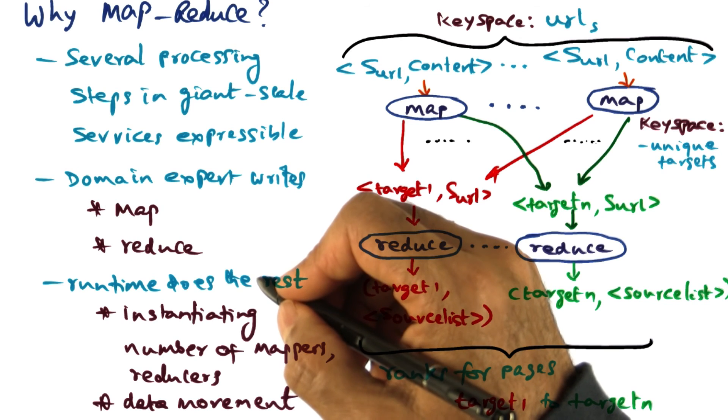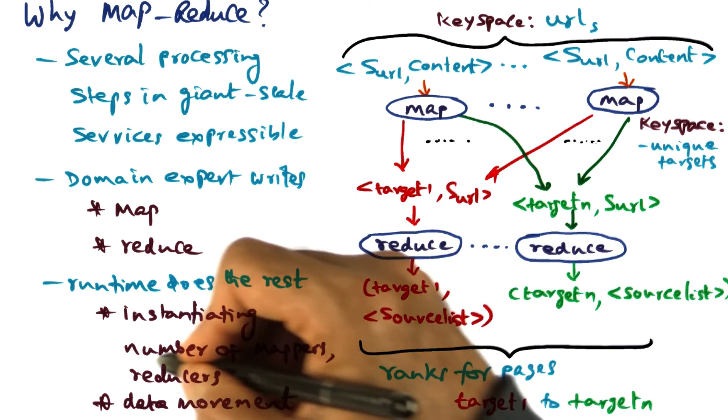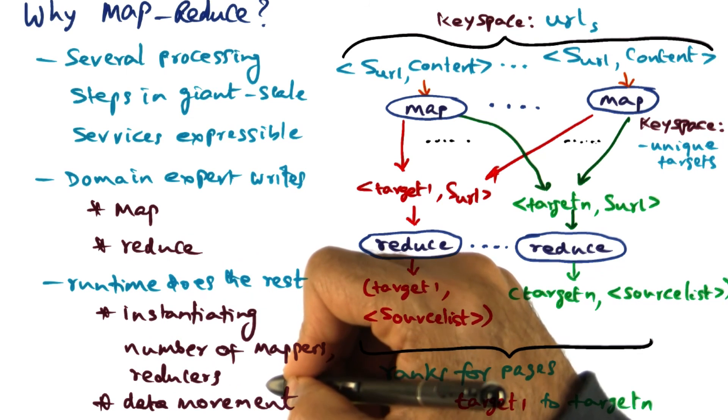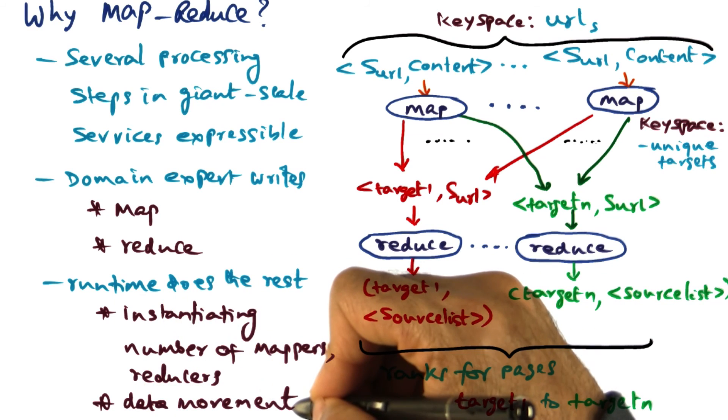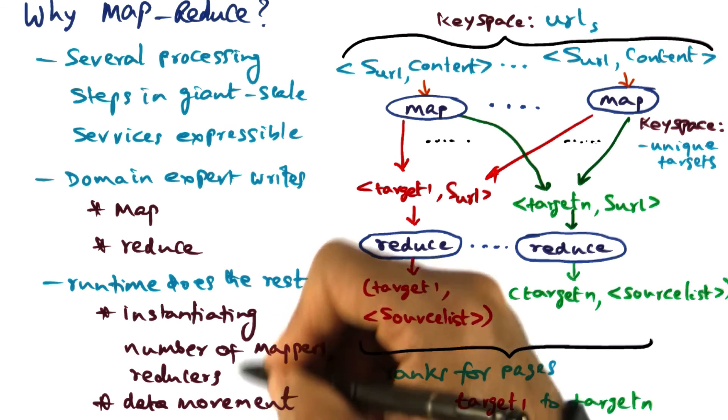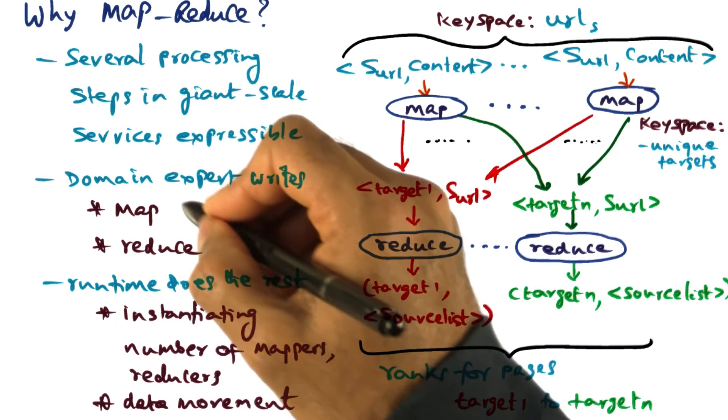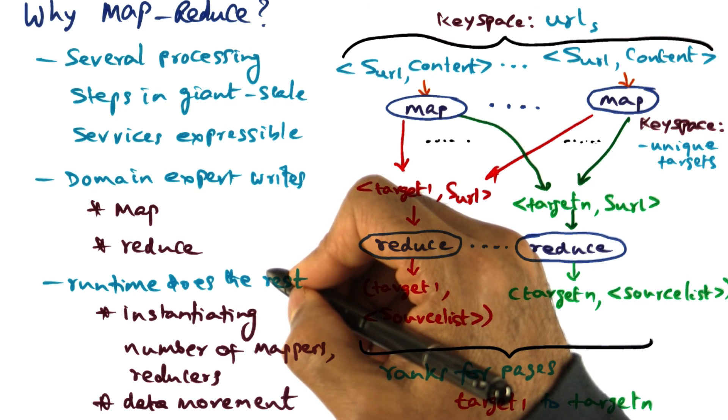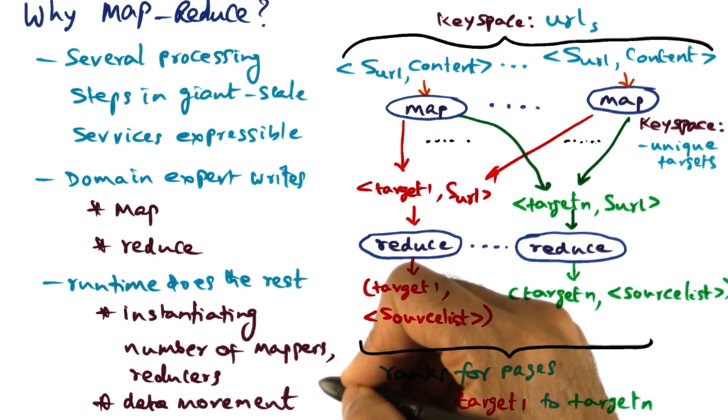All the heavy lifting that needs to be done in terms of instantiating the number of mappers, instantiating the number of reducers, the data movement between the mappers and the reducers, all of those chores are taken care of by the programming environment. All that the domain expert had to do was to write the map and reduce function that is unique to the particular specifics of his application. Rest of the heavy lifting is all done by the programming framework.